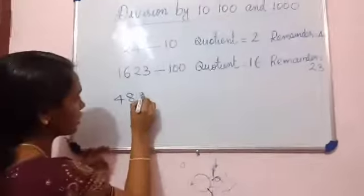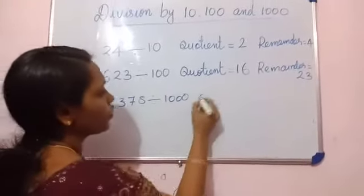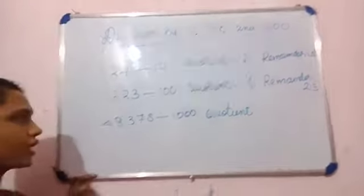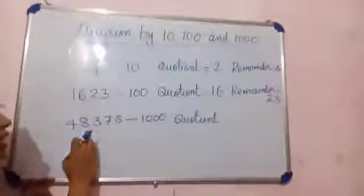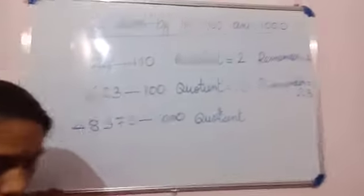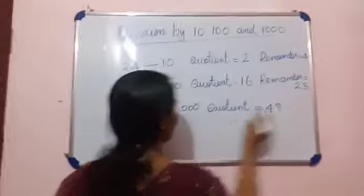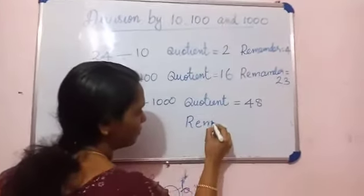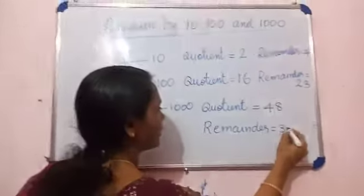Next, division by 1000. Let's check: 40378 divided by 1000. Here the divisor is 1000 — how many 1000s? The quotient is 40. Then the remaining last three digits are the remainder, so the remainder is 378.